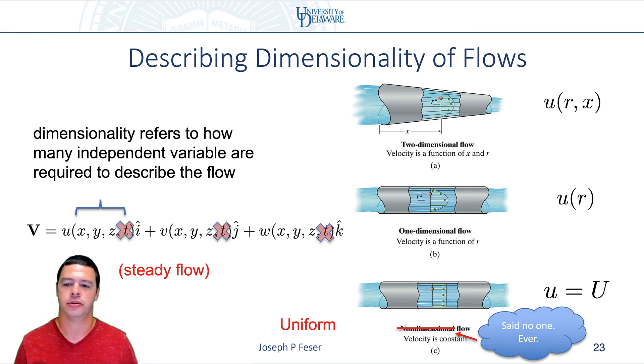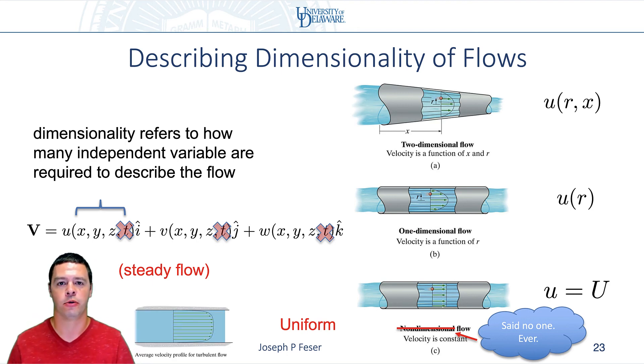And so some smart alec who's watching this video might go, hey Feaser, that uniform flow doesn't obey the no-slip condition. So why am I learning about this in the context of pipes? The answer is actually, this does come up as an approximation for pipes.